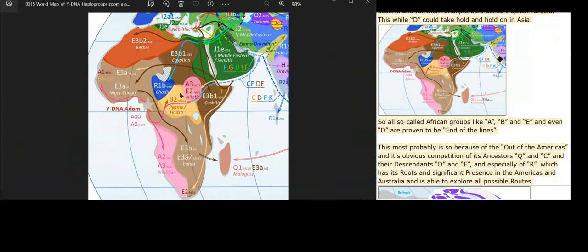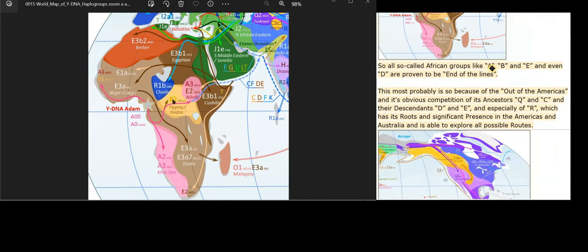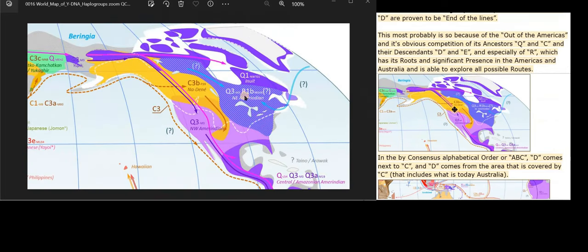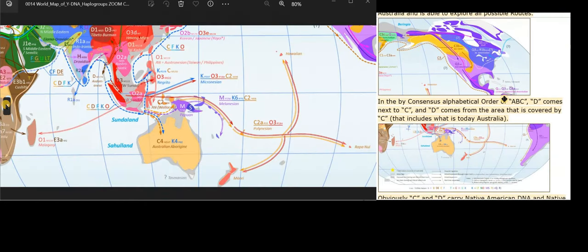So all so-called African groups like A, B and E and even D are proven to be end of the lines. This most probably is so because of the out of the Americas and its obvious competition of its ancestors Q and C and their descendants D and E, and especially of R, which has its roots and significant presence in the Americas and Australia and is able to explore all possible routes.